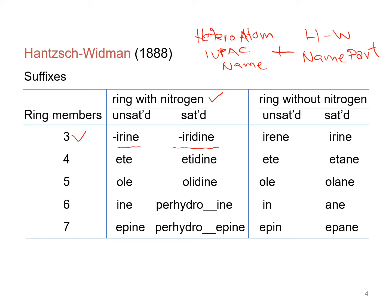If the hetero atom is oxygen and the ring is a four-membered ring and the compound is unsaturated, the name is oxete. If that compound is saturated, oxygen-containing, and a four-membered ring, the name of that saturated compound is oxetane. From this table we can easily understand how to name heterocyclic compounds according to the Hantzsch-Widman system.